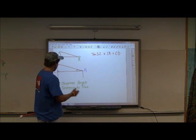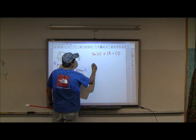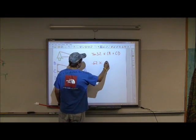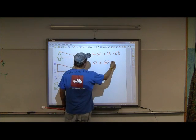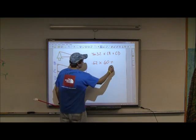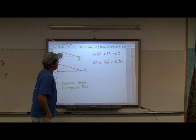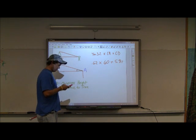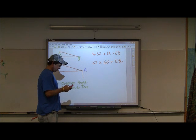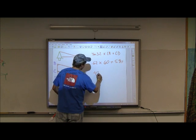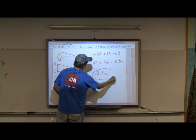Alright, going back over here, let's solve this problem. We have 0.62 times CA, which is going to be 60, plus my height, which is CD, which is going to be 5.9 feet. Use a calculator real quick and figure this out. We have 0.62 times 60 plus 5.9. And that will equal 43.1 feet, which is going to be the height of our tree.